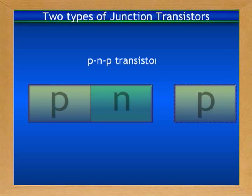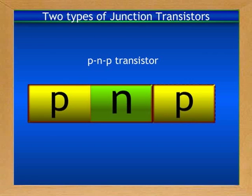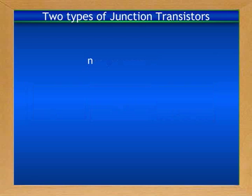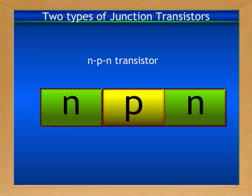In a PNP transistor, the addition of one p-type semiconductor to the right of the n-type semiconductor gives a device with three extrinsic semiconductors in the order of P-N-P, as shown in the slide. This device is called the PNP transistor.